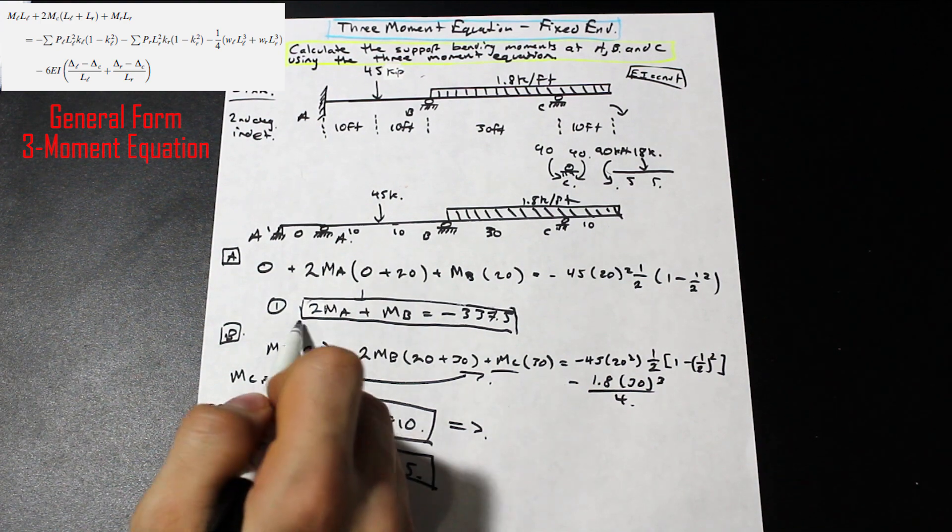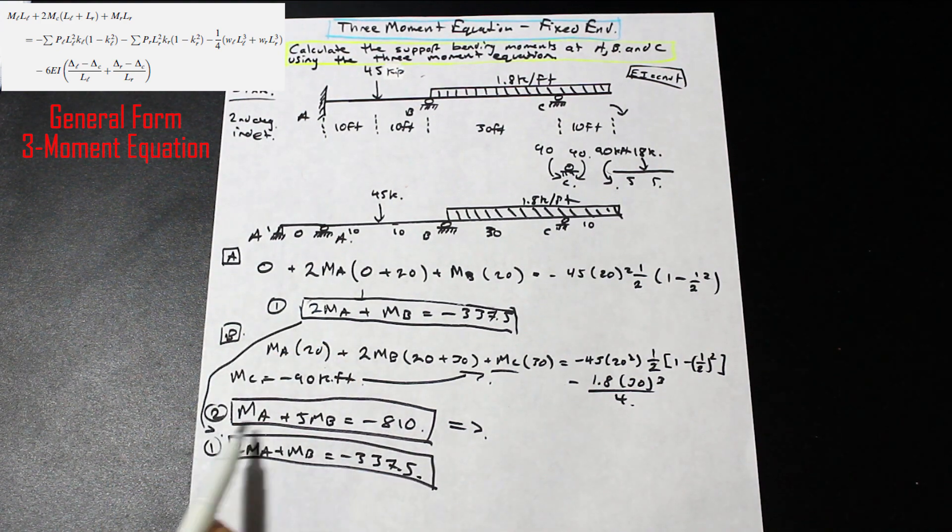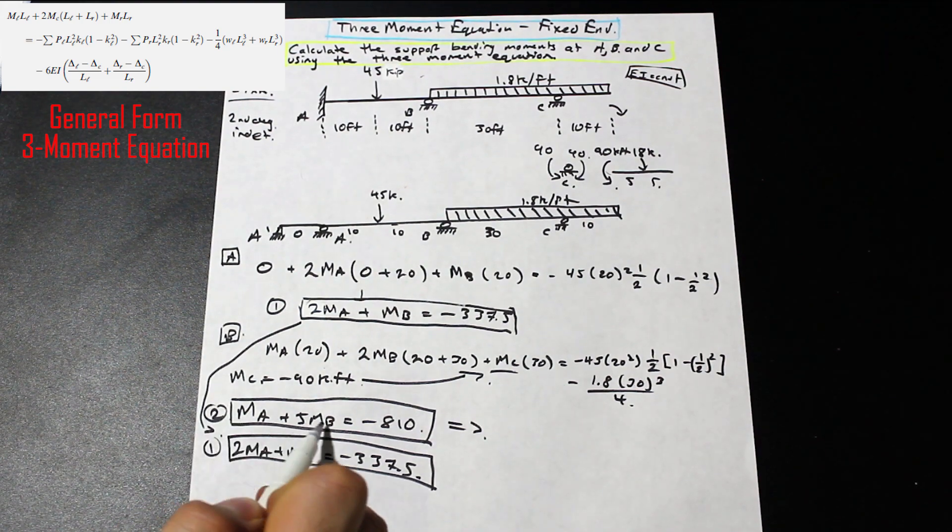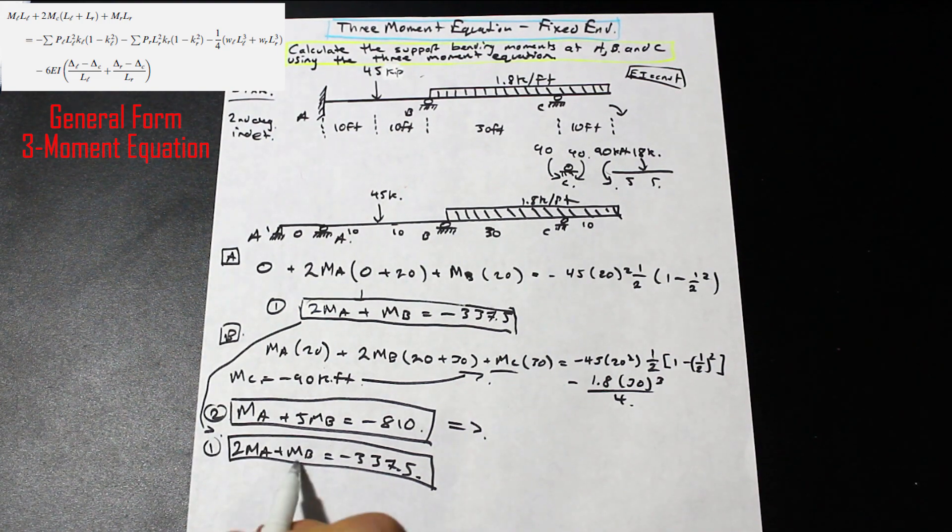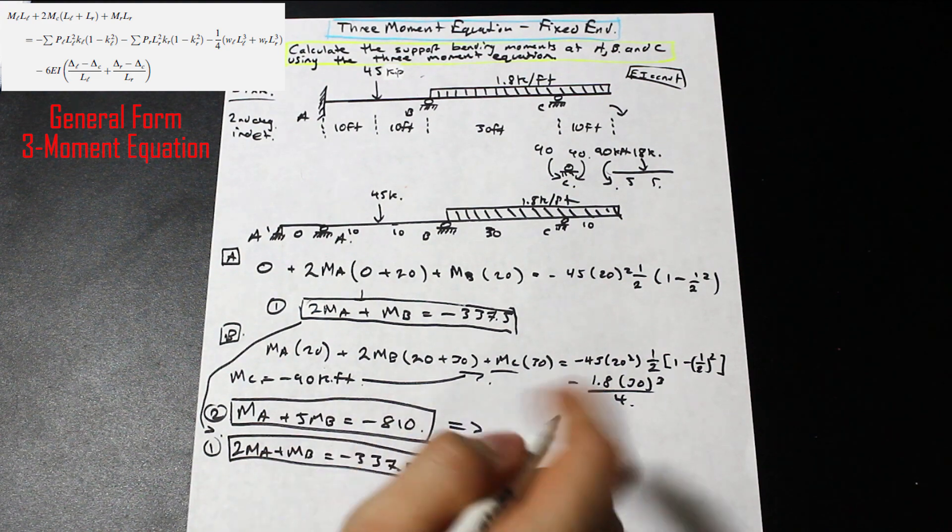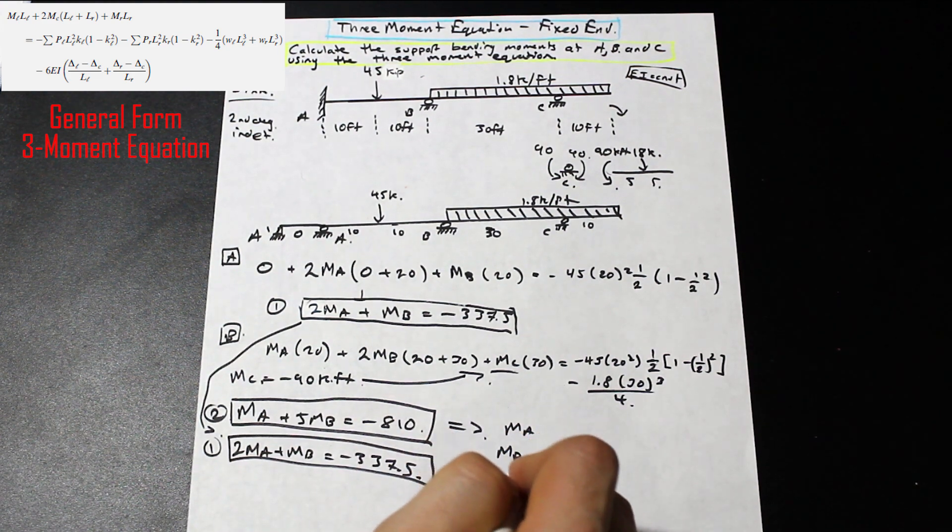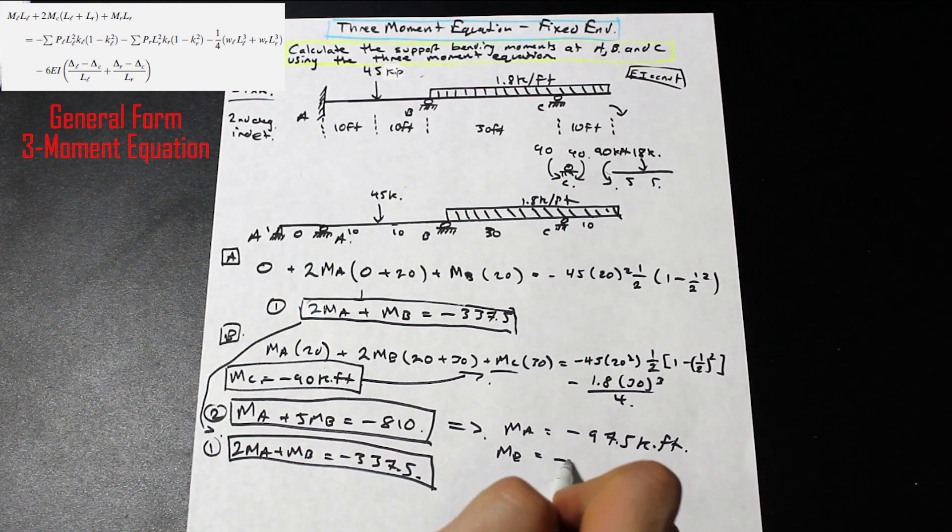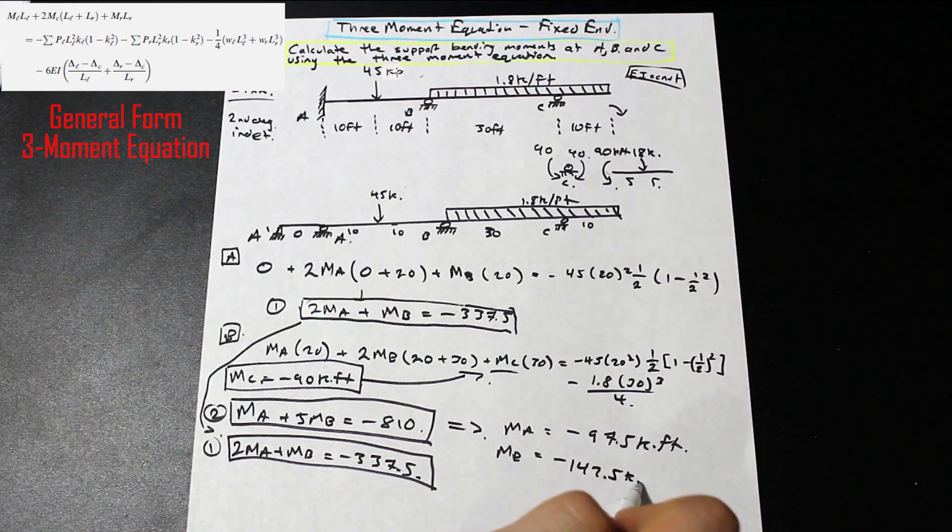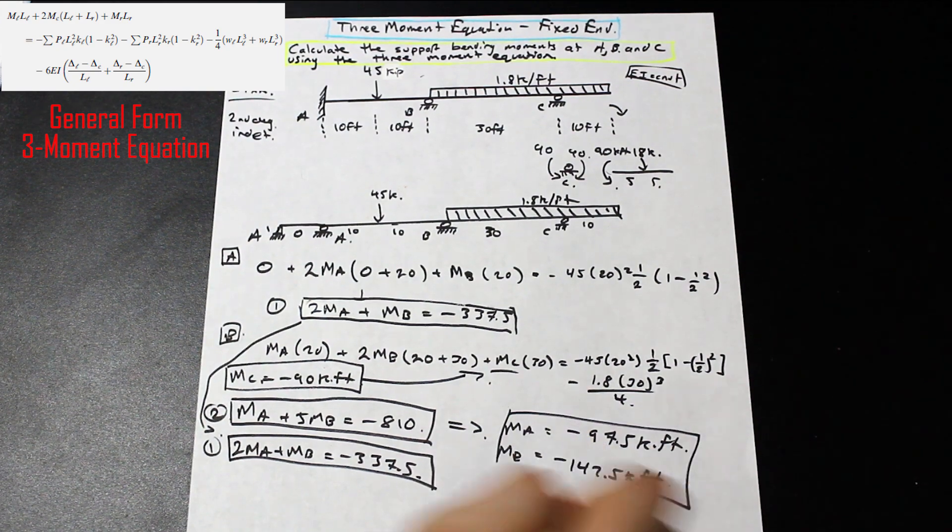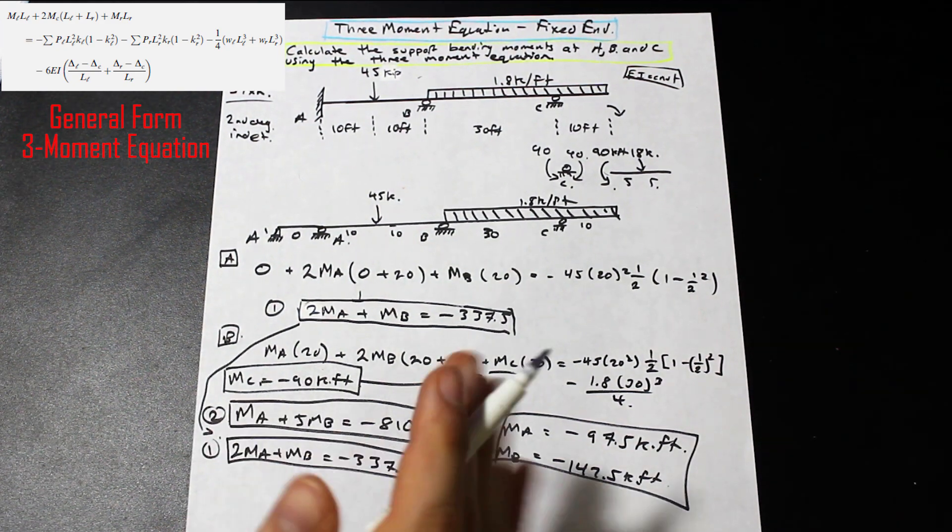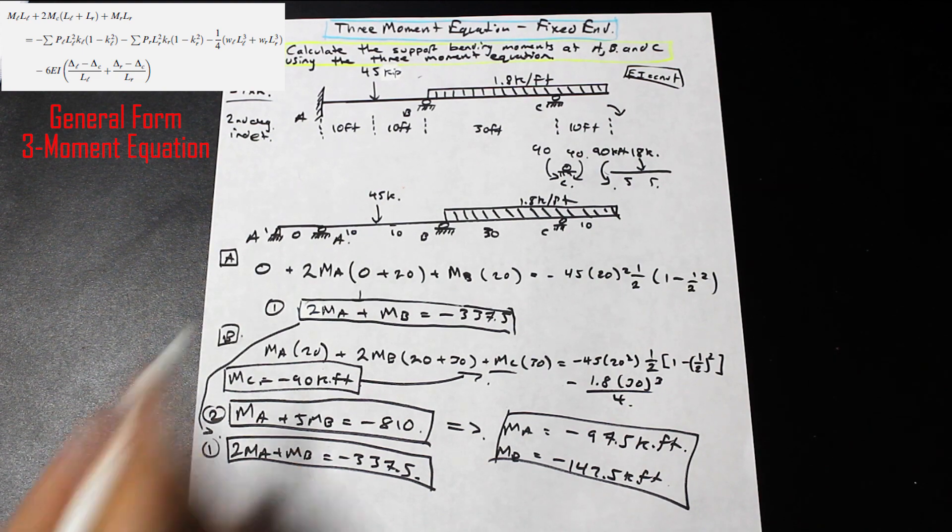And guys, as you can see here, you have a system of two equations, really super simple stuff. You know, solve for MA, isolate for it, plug it in, solve for MB, and you're done. And you're going to get values of, for MA and MB, negative 97.5 kip feet and negative 142.5 kip feet. Cool. So there you go. That's your answer. You solve for MA, MB, and you have MC. That's exactly what the question asked. We found the bending moments at all of the supports.